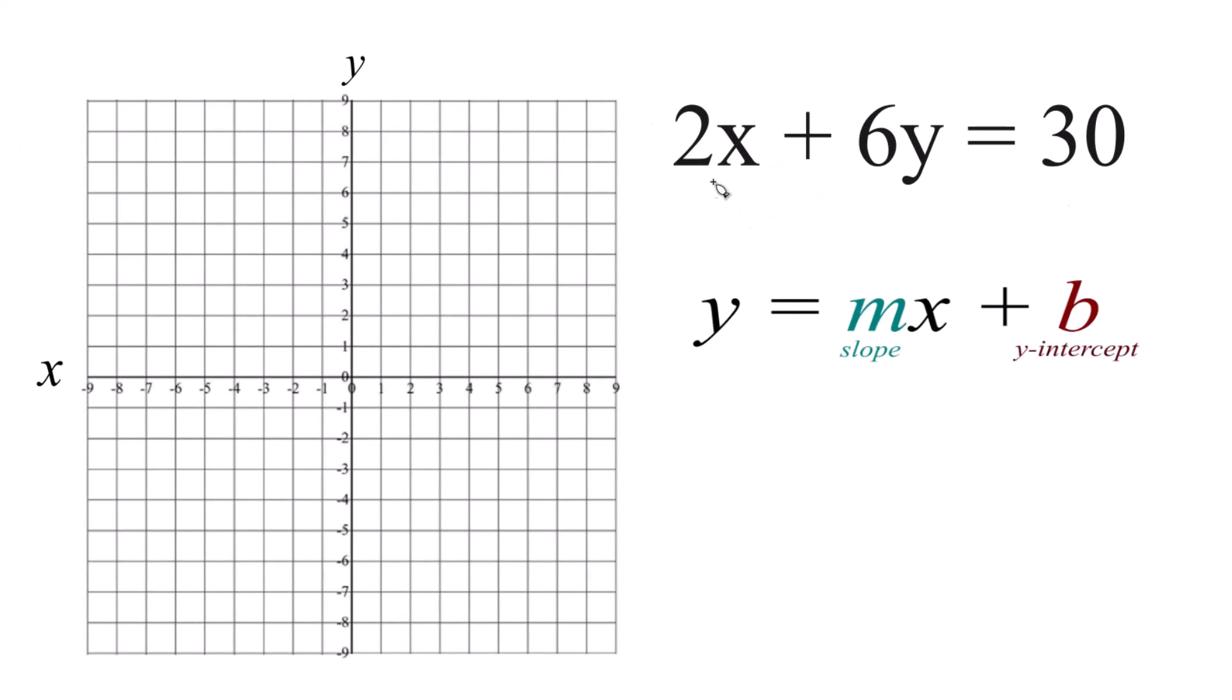Let's graph the linear equation 2x plus 6y equals 30. We're going to use slope-intercept form to do this. You could use a table of values, it would work, you'd get the same answer, but this is a good bit easier.